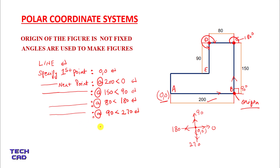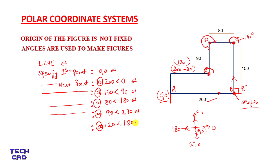Now again it will ask you to specify the next point. Add the at-sign — you are here at point E and you are moving towards the left side. The length of this line is 200 minus 80, so that becomes 120. So the length of the line is 120, and the angle — you can see — is 180.